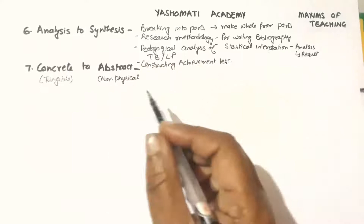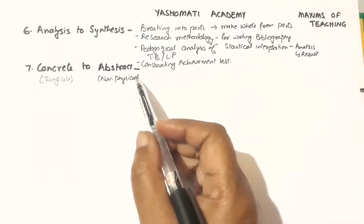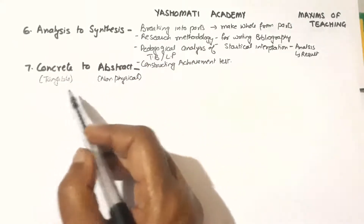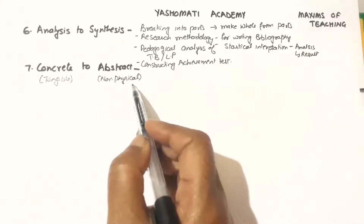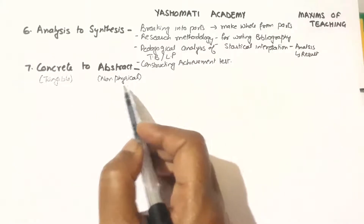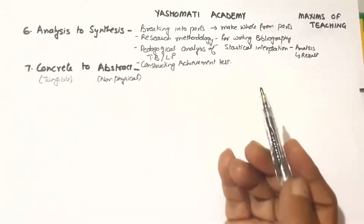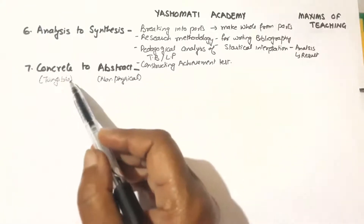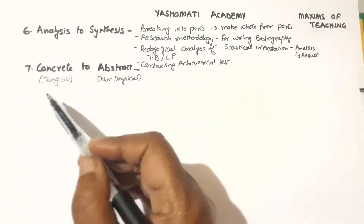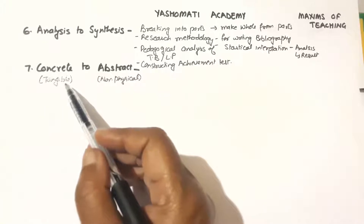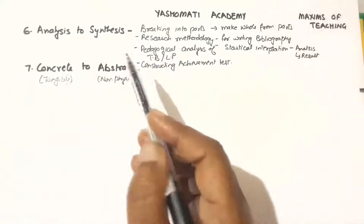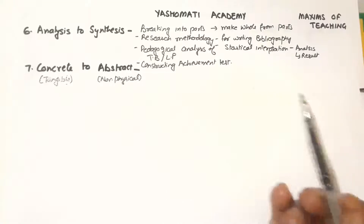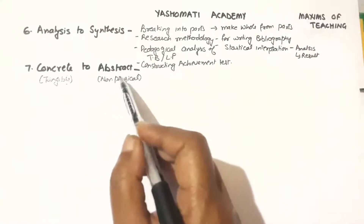When we are interacting with learners, we come across some aspects which are tangible and some which are non-tangible. For example, behavior and attitude of a learner — they are concrete or observable. Whereas idea, intelligence, or thinking — they are abstract.